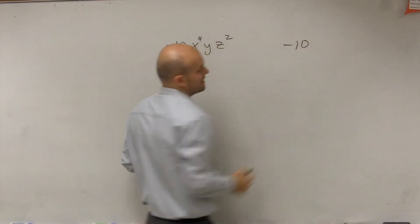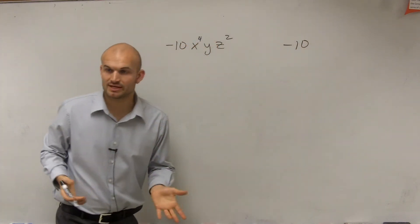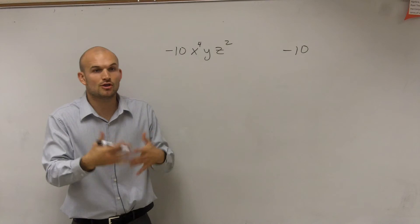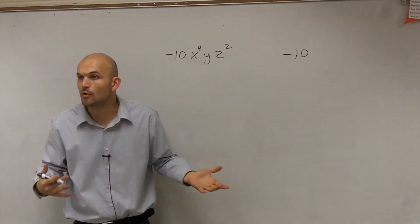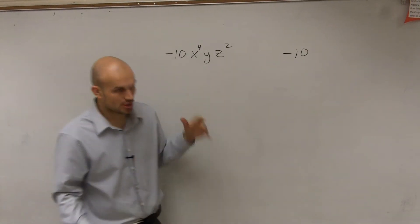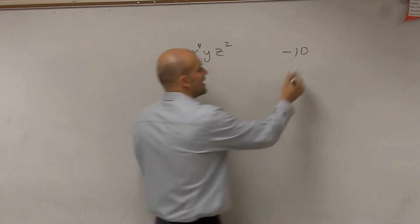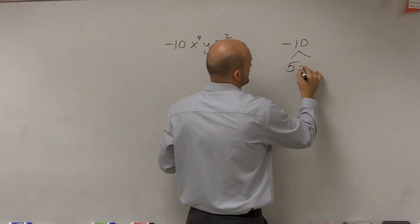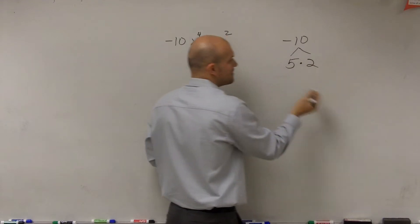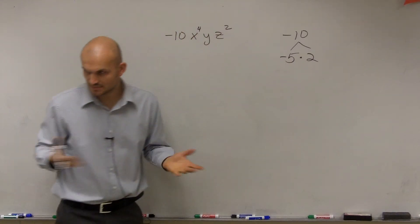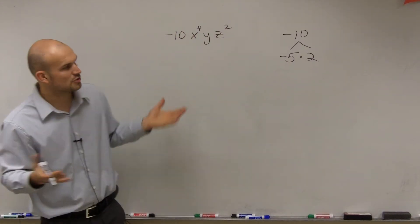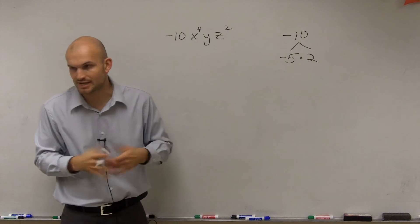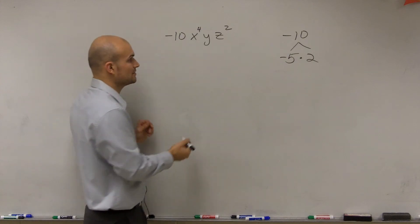Negative 10 is not a prime number — we can divide numbers into it other than 10 and 1. You can pick 5 and 2. Remember, one of them has to be negative. It doesn't really matter which one you choose; you can break it down to negative 5 and 2.